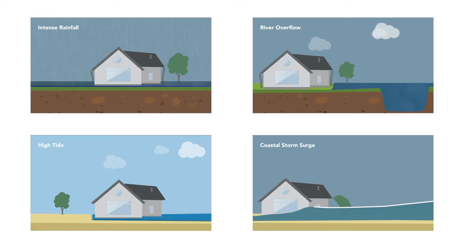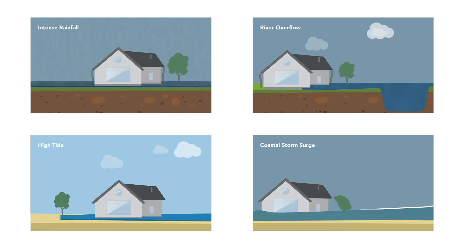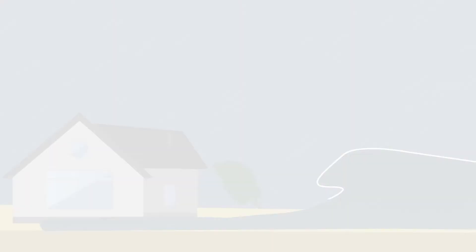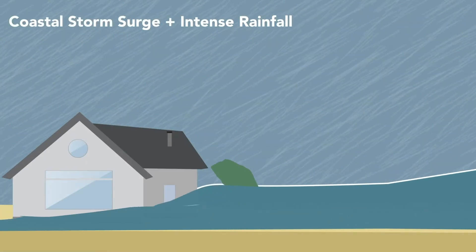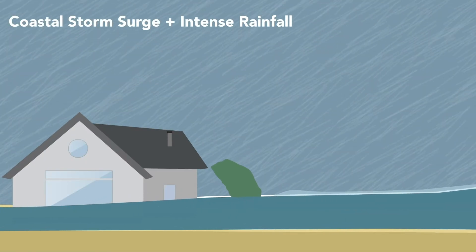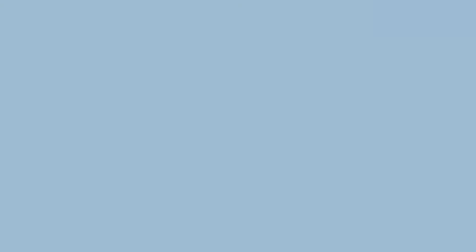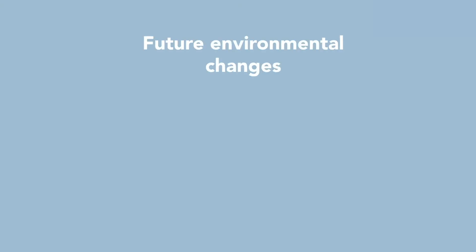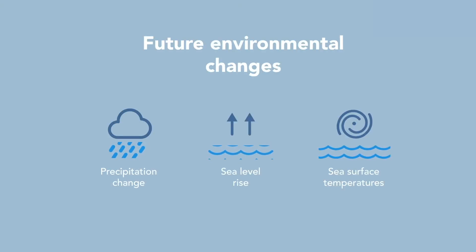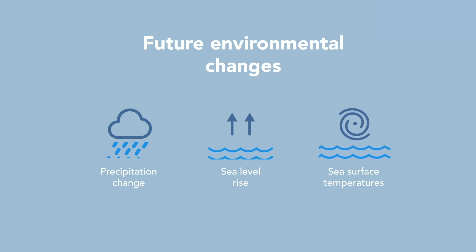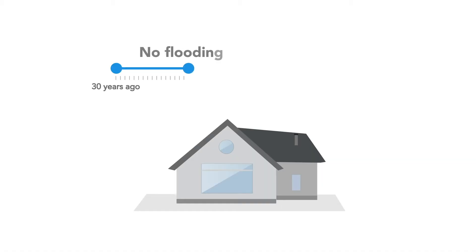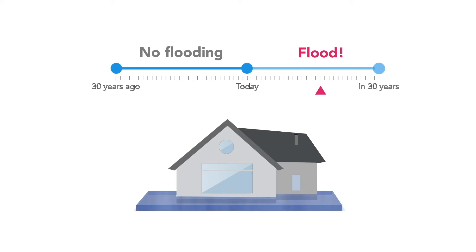Because these different flood types are often interconnected, they are first analyzed independently, then coupled together where appropriate. Flood Factor also takes into account how flood risks will change over time with sea level rise and atmospheric changes over the next 30 years, which means even a property that hasn't flooded in the recent past could still face flood risk in the future.